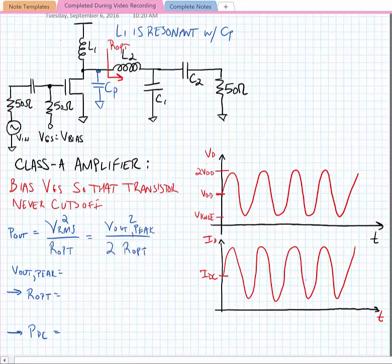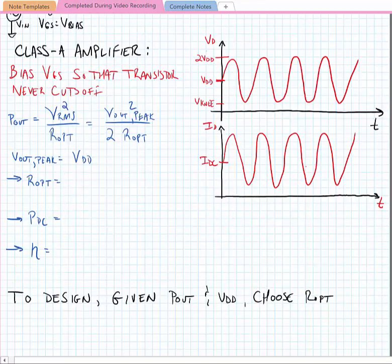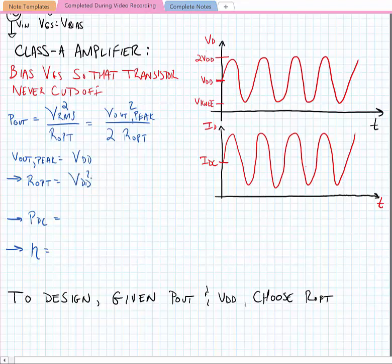We're assuming that Vout-peak is equal to VDD. Leveraging this information, we can find that the optimum termination impedance, R-Opt, can be given to us if we know what our supply voltage is: VDD squared divided by 2 times our output power.